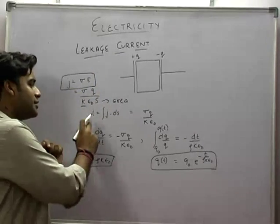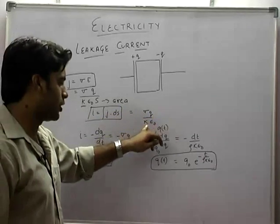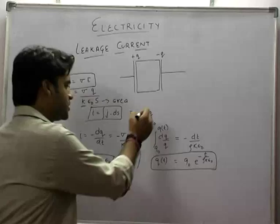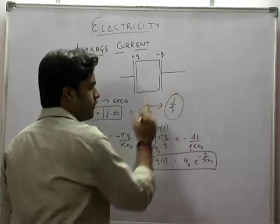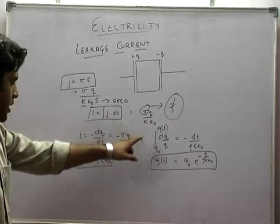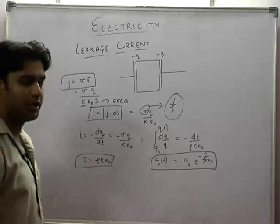Now, I is given by J.ds. So our I value is sigma into Q upon K epsilon. Now, sigma is the conductivity. I can say that resistivity is 1 upon rho. I will be equal to minus DQ by DT.